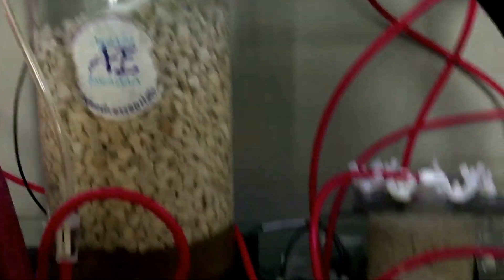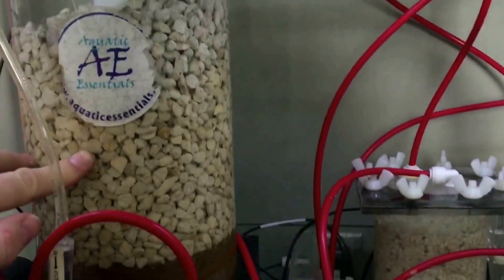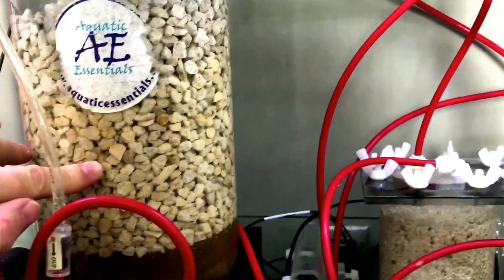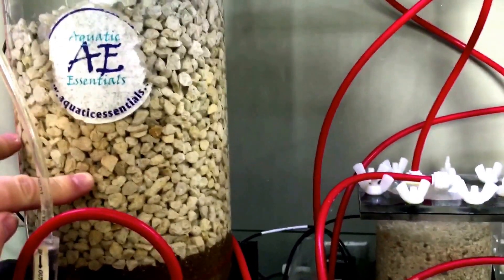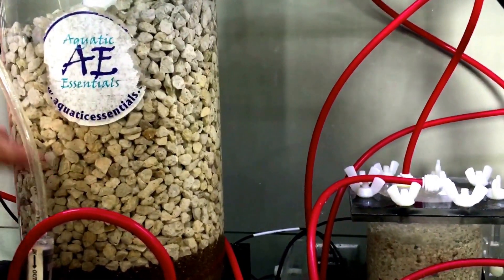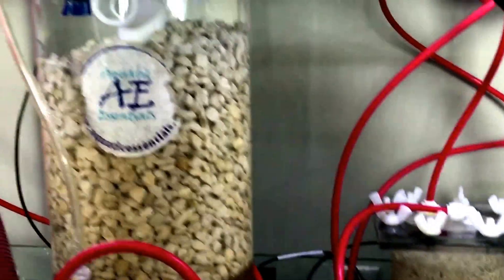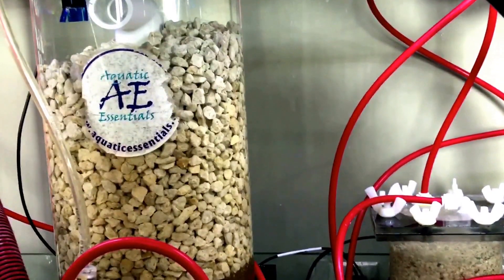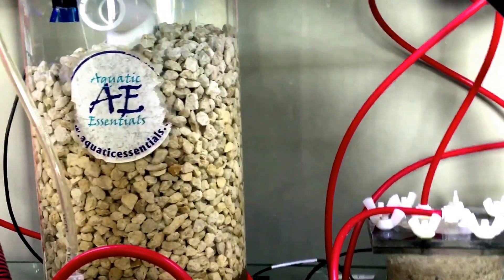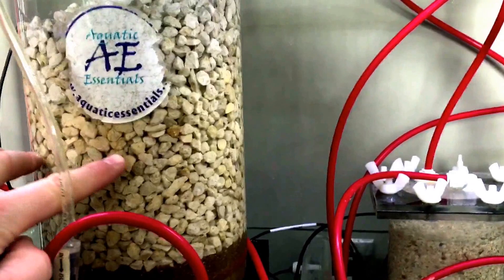Essentially how it works is all these rocks inside this course media is dead coral skeleton. Your current tank usually has a pH of 7.8 to 8.3 range. When you drop the pH below 7, the water turns acidic and will slowly start dissolving this media.